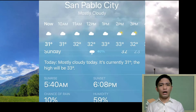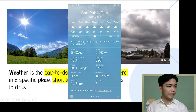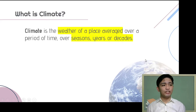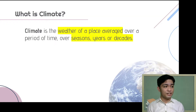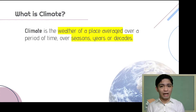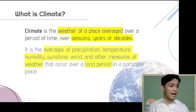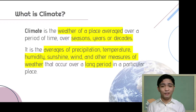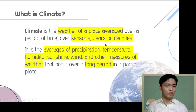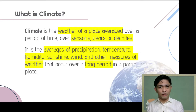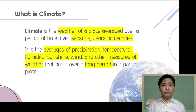Now, how does climate differ from weather? When we speak of climate, it pertains to the weather of a place averaged — take note, averaged — over a period of time: over seasons, years, or even decades. Average is really within 30 years. It's the average of those weather measures I mentioned — what a place usually experiences over the past years. That is what we refer to as climate.